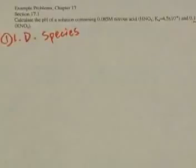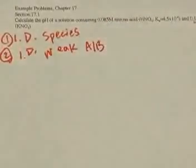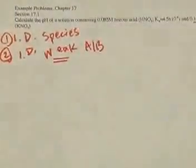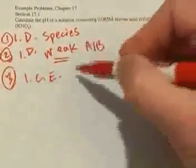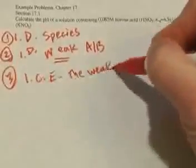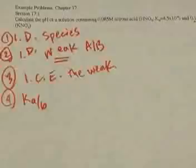Step one: identify the species in the solution — what are the ions and what are the molecular species or things that don't completely dissociate? Step two: identify what the weak acid, base, or weak electrolyte is, because it only partially dissociates and that's what we'll write the equation about. Step three: write an ICE table for the weak thing, and figure out where your common ions fit in. Step four: use the Ka or Kb of the weak acid or base to solve the problem.